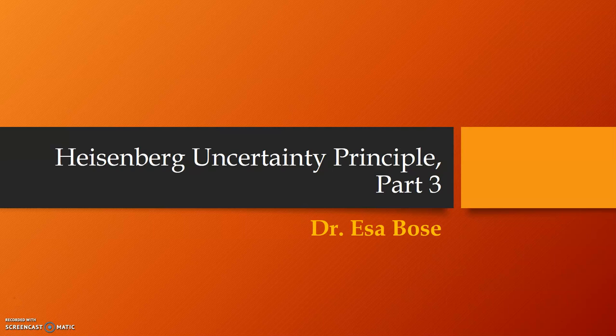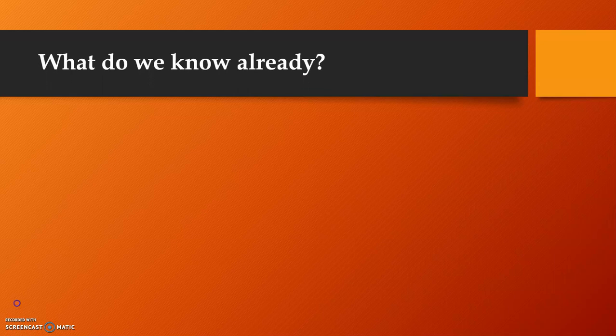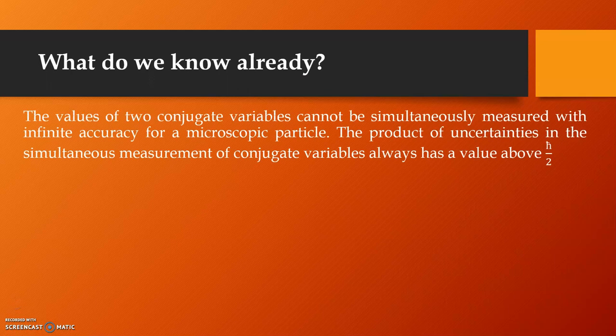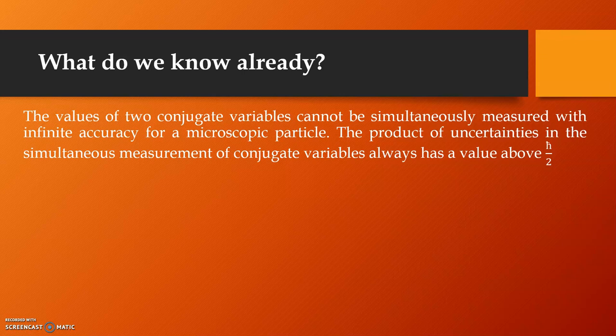So what do we know about this principle from our earlier discussions? We have seen that the values of two conjugate variables cannot be simultaneously measured with infinite accuracy for a microscopic particle.